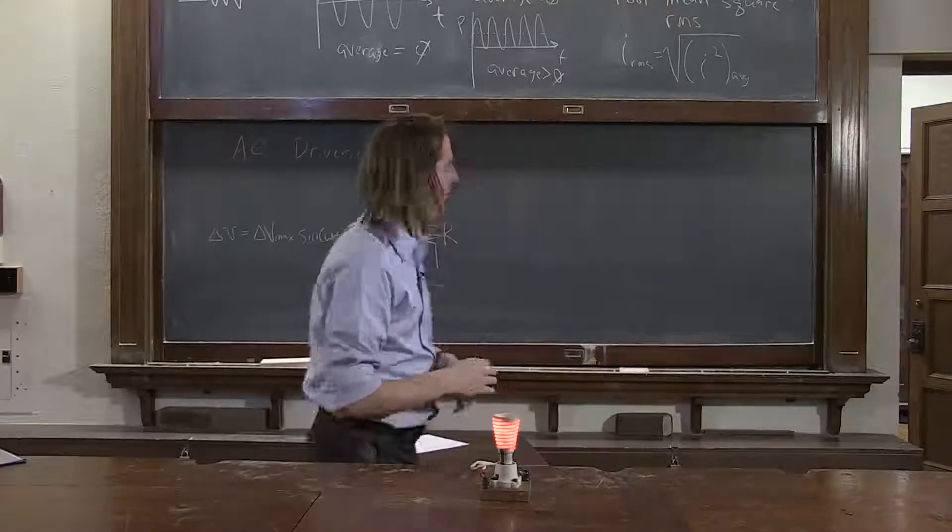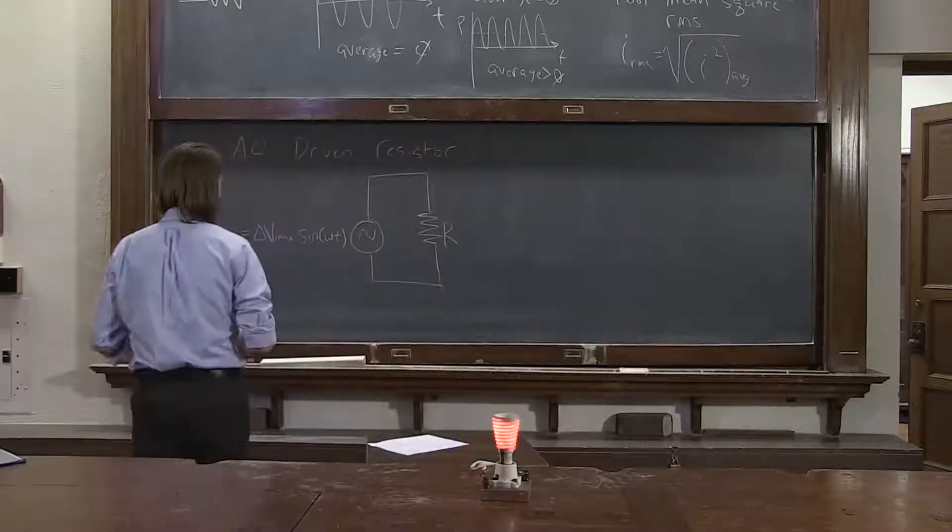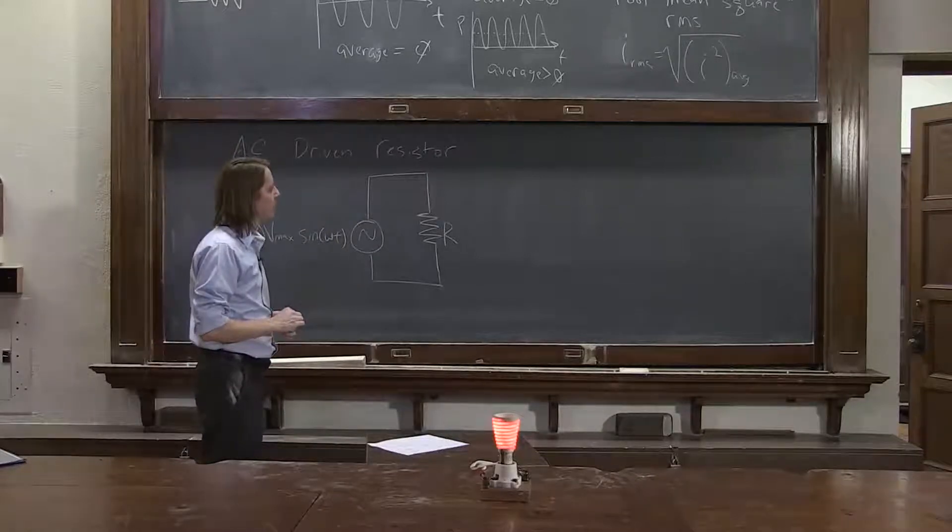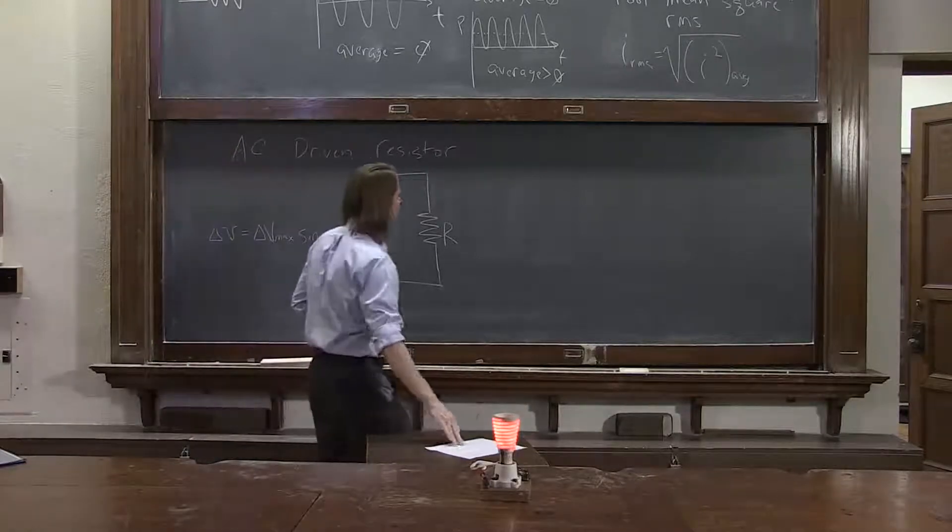Current's flowing back and forth, voltage is oscillating back and forth, the potential difference. So let's think, how do we describe that?